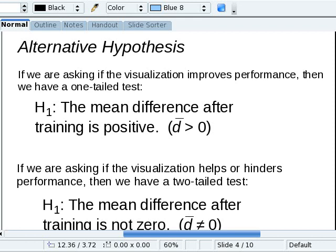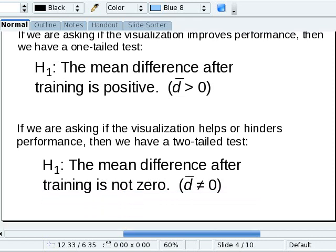If we're not sure whether it works or not, and we're asking whether it helps or hinders performance, then we have a two-tailed test, and our alternative hypothesis is that the mean difference after training is just not zero, d̄ ≠ 0. Either they're going to get better or they're going to get worse, and we don't know which. So when you make your alternative hypothesis, this tells you whether you want a one-tailed test or a two-tailed test.